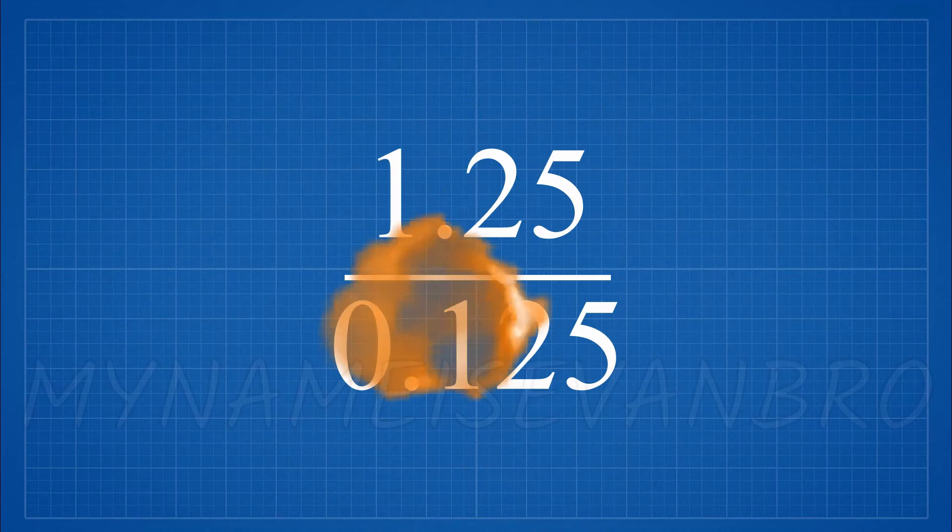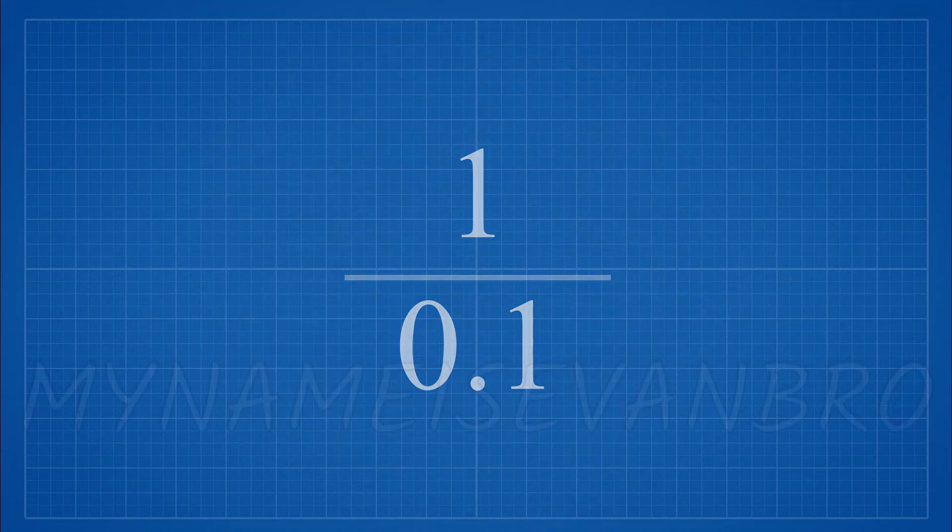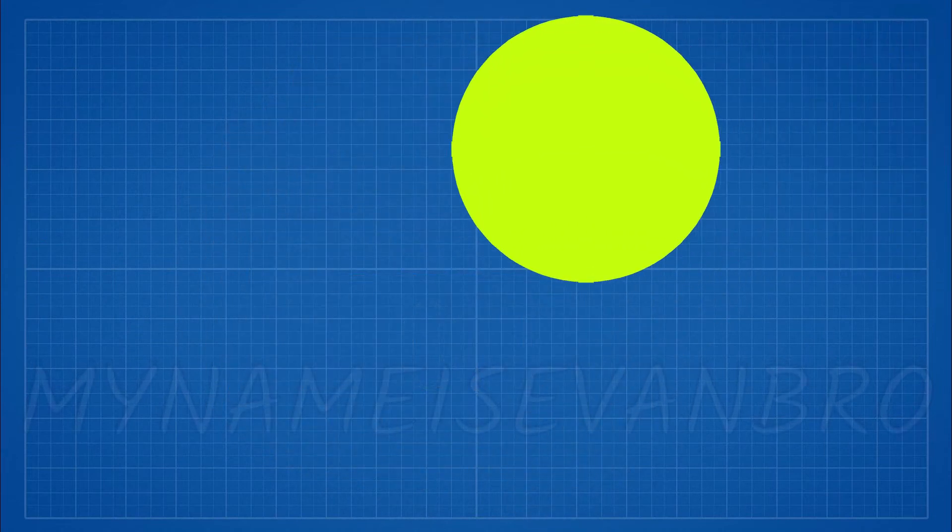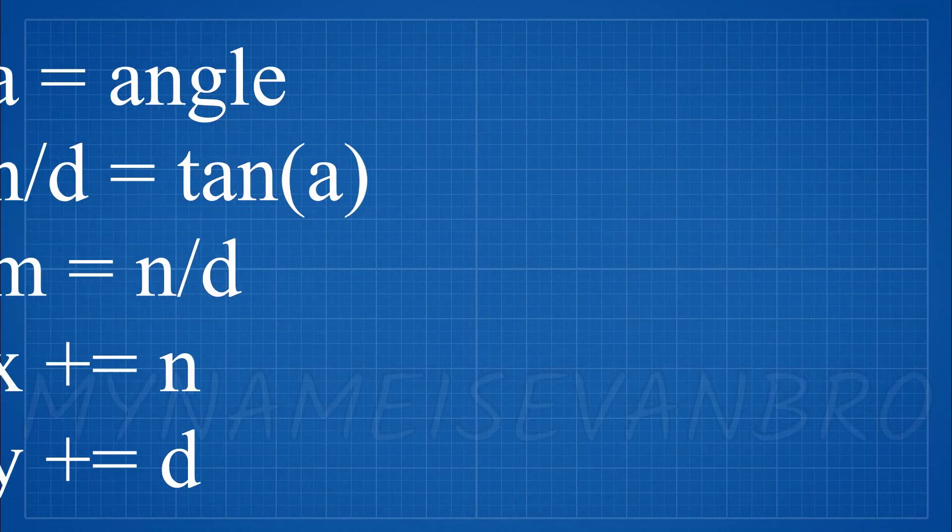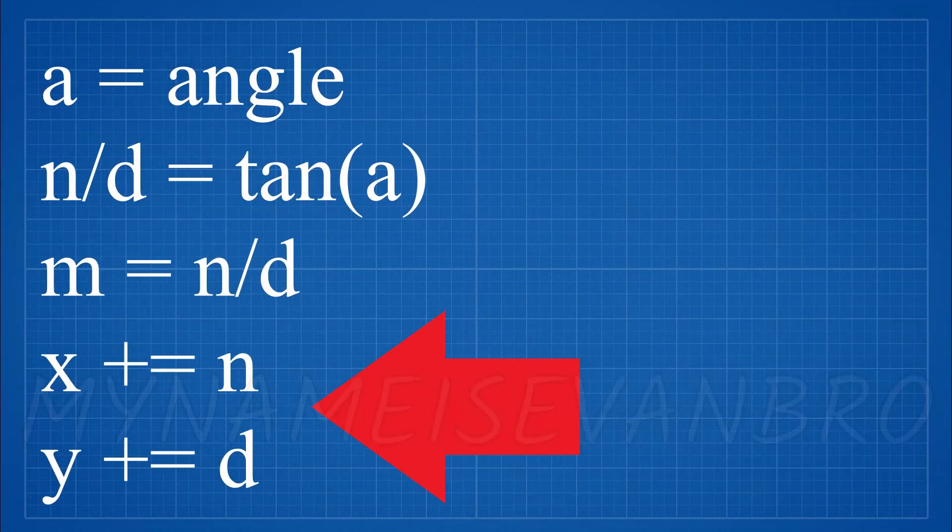Now you can add the numerator and denominator to the x and y axis. As you can see, the colony is not moving correctly. This is because you cannot just add the values to the axis.